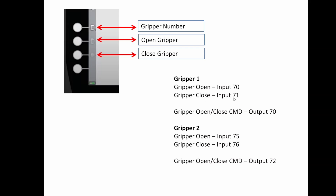For gripper one: input 70 tells me it's open, input 71 tells me it's closed. To open or close gripper one, I send a command to output 70. For gripper two, I'll use input 75 and input 76 for open and closed feedback, and output 72 to open or close gripper two. The robot display shows the gripper number, which gripper you're controlling, and buttons to open or close it.